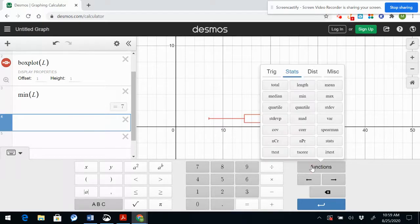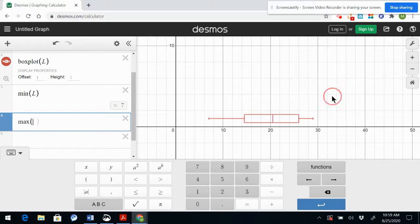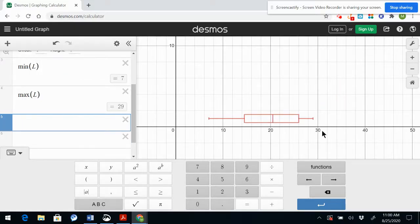Now I want my maximum so again I go to functions max, my data set L and I get 29, again corresponding to the box and whisker plot.